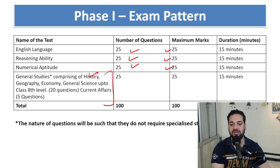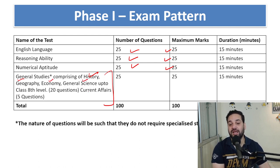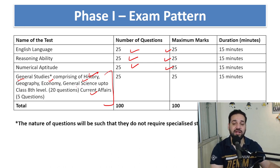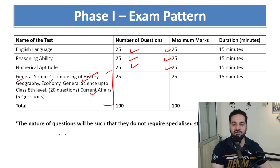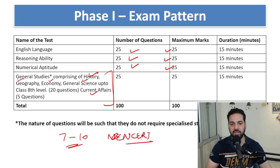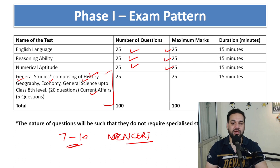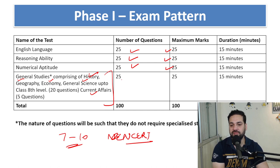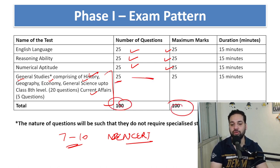In Phase 1, General Studies includes History, Geography, Economics, General Science, and Current Affairs. History and Geography are up to Class 8th level. We recommend students study NCRT from Class 7 to 10th - that's what we are going to teach: History, Geography, and General Science. So that's 25 questions in General Studies, making it 100 questions, 100 marks within 60 minutes.